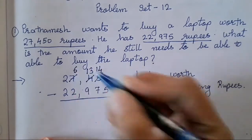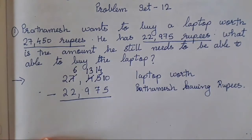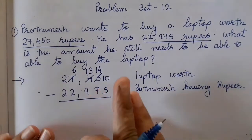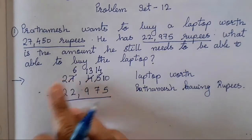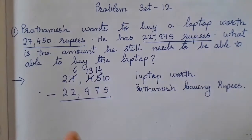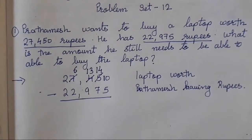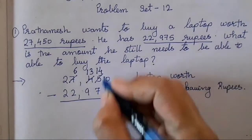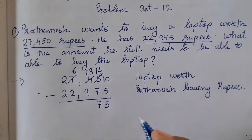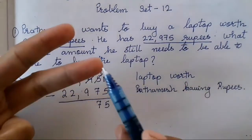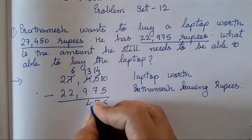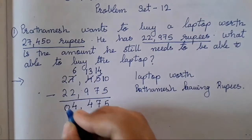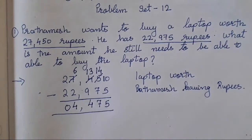Again, borrow 1 from 7, so this will become 6. Now I hope everyone has practiced this method because it is the easiest — you all have to first borrow all the numbers, keep the sum ready, so only subtraction is left at the end. So 10 minus 5 is 5. 14 minus 7 is 7. After 9: 10, 11, 12, 13 — so 13 minus 9 is 4. And 6 minus 2 is 4. 2 minus 2 is obviously 0.